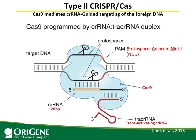Cas9 is a nuclease with two domains. It will cut both strands into a double-stranded break. The target sequence is only 20 base pairs — that's also in the crRNA, a 20 base pair target-specific sequence. The target sequence in the target DNA is also 20 base pairs, but it requires a PAM motif — protospacer adjacent motif — which is NGG. N can be any nucleotide. This NGG must immediately follow the 3-prime end of the target sequence, but it is not included in the crRNA.